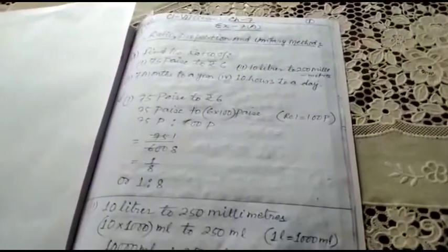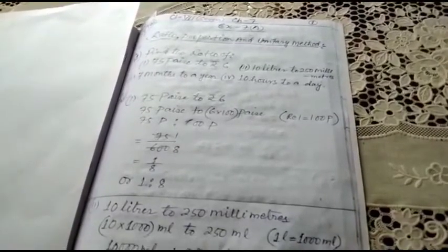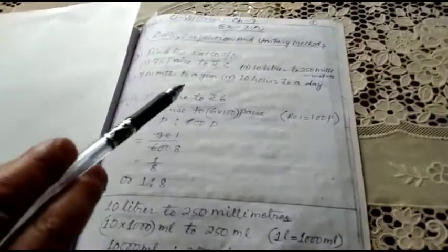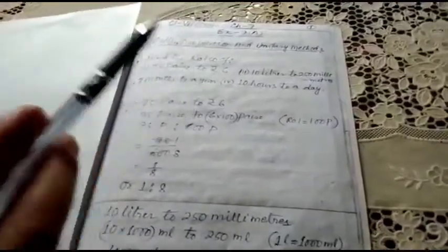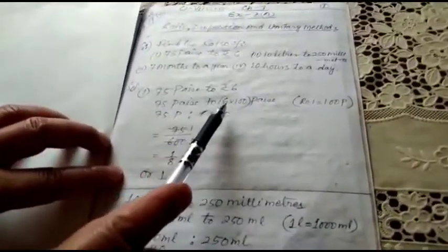First, for ratio, find the ratio of 75 paisa to rupees 6, and 10 liters to 250 milliliters. I'll explain: 75 paisa to rupees 6. When you compare the ratio, the two units should be similar. Here one is in paisa, another in rupees, so I will convert 6 rupees into paisa by multiplying 6 into 100.